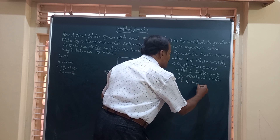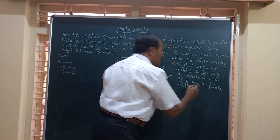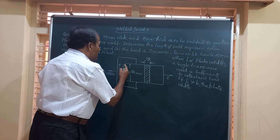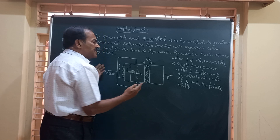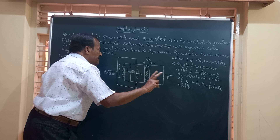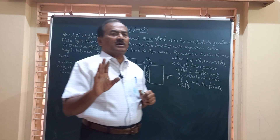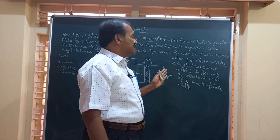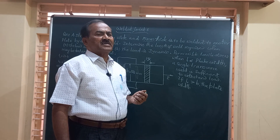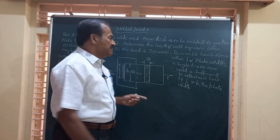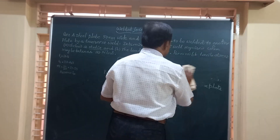If L is greater than the plate width B, you would have to go in for a double transverse weld — welding done on the top side and also on the bottom side. The required total weld length is divided equally between the two sides. However, in this problem the length is lesser than the plate width for both static and dynamic loading, so we need not go for a double transverse weld. A single transverse weld is sufficient to withstand this load.